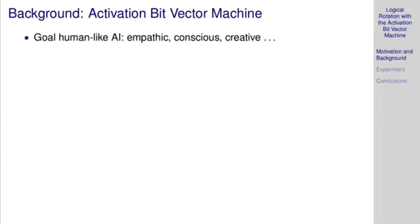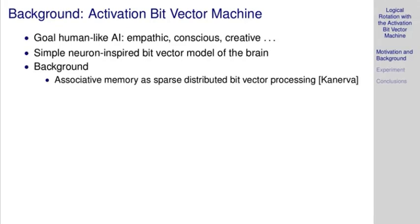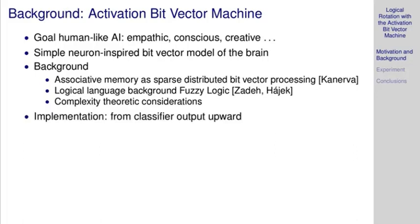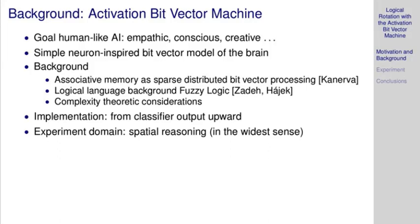The motivation is to work towards human-like AI that is empathic, conscious, and creative. The basis is the vector-symbolic architecture of Kanerva, logical language background in fuzzy logic context logic, and complexity theoretic aspects. This is all being implemented and the experimental domain is spatial reasoning in the widest sense.